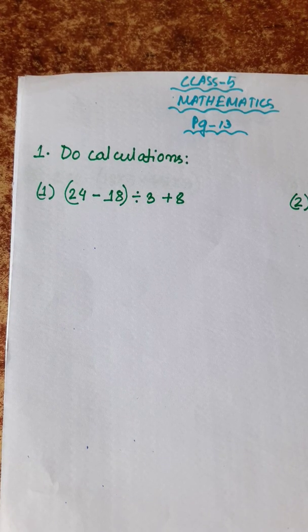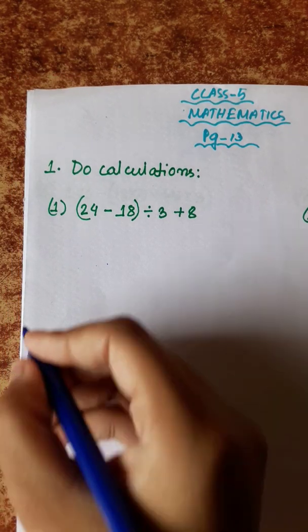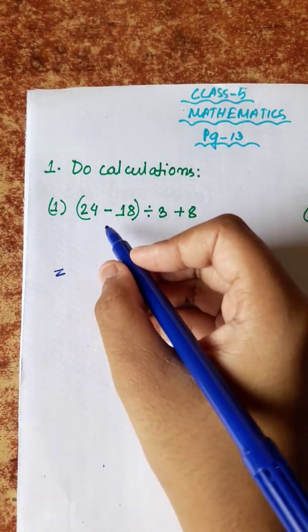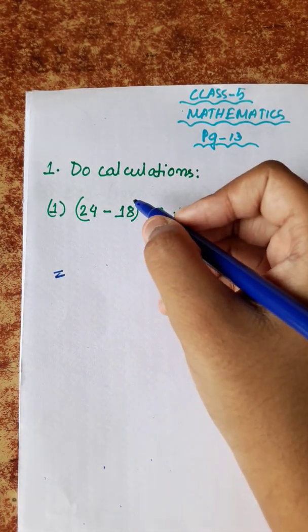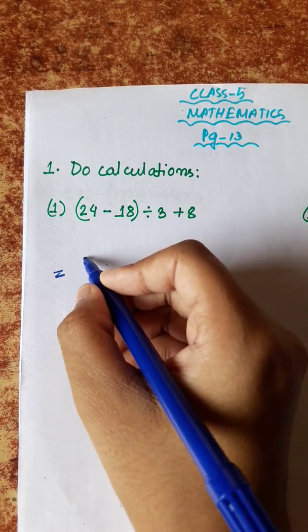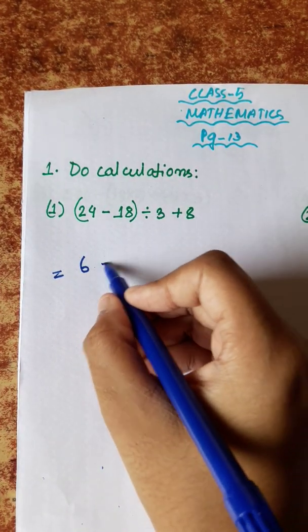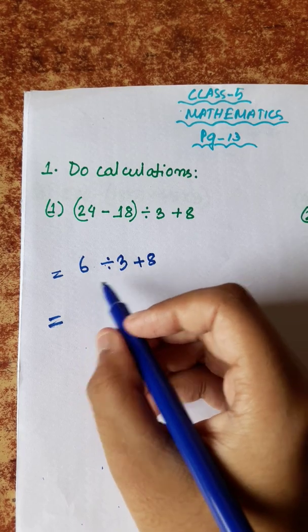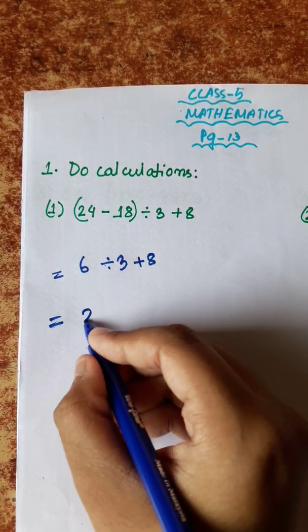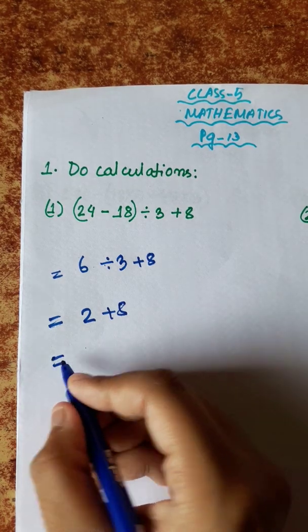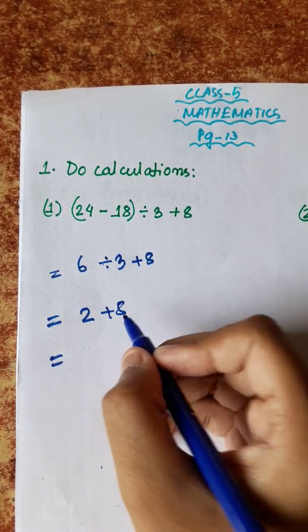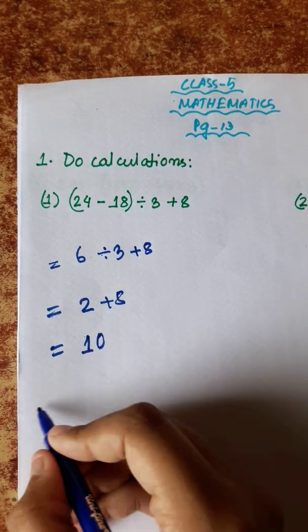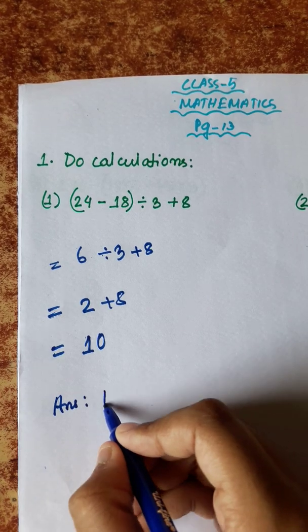Now let's take a look at page number 13, number 1. Two calculations. First bracket: 24 minus 18, bracket closed, divided by 3, plus 8. Our first step is to start with the bracket — subtraction inside: 24 minus 18 is 6. Then division: 6 divided by 3 is 2. Then plus 8: 2 plus 8 is 10. So answer is 10.